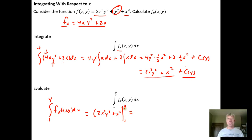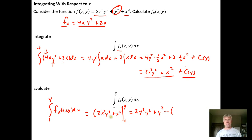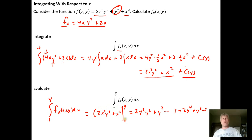We do exactly what we're accustomed to: everywhere we see x, replace it with the upper bound y. So 2x² becomes 2y² times the y² already there, giving 2y⁴, plus y². Then subtract the lower bound: plug in x = 1, giving 2(1)(1) + 1 = 3. So the result is 2y⁴ + y² − 3. This is typical — a definite integral with respect to x gives a result that is strictly a function of y.